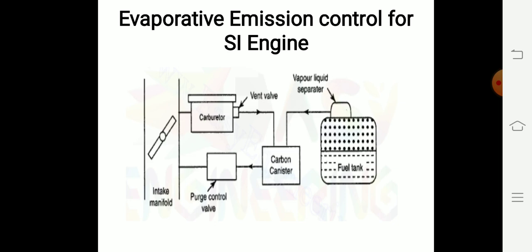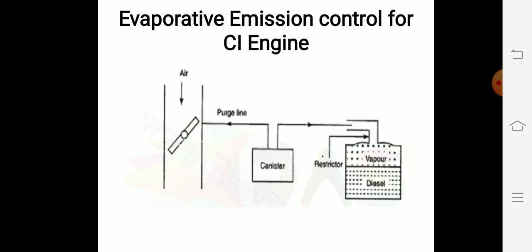The same method is used in the CI engine. CI engine means compression ignition engine or diesel engine. The same method is used here. The construction details are shown here. A diesel tank is there, above the diesel tank vapor is there, that vapor goes to canister.